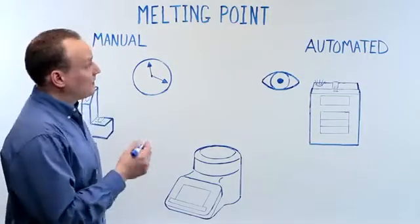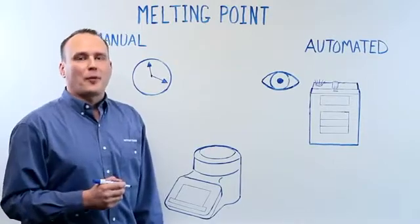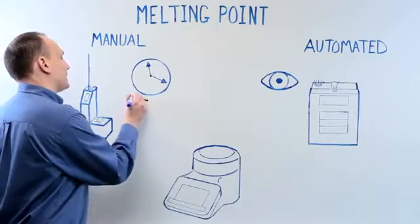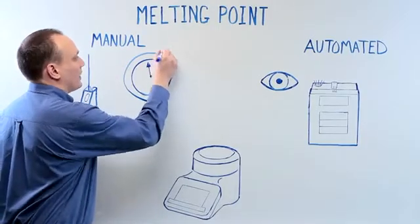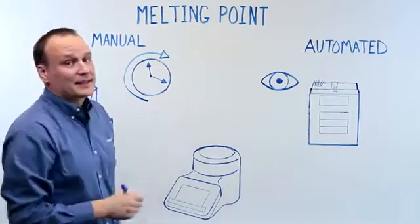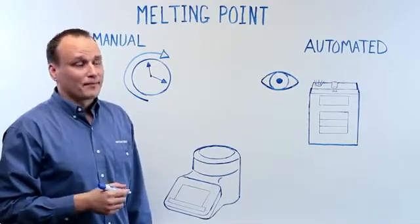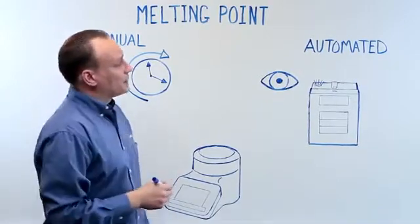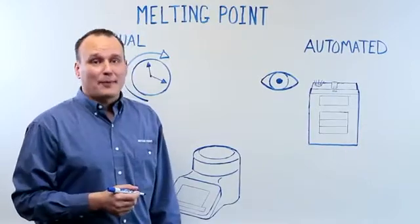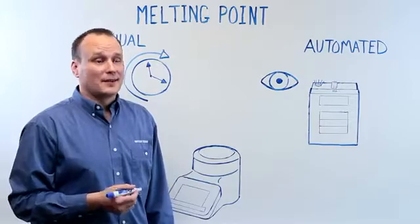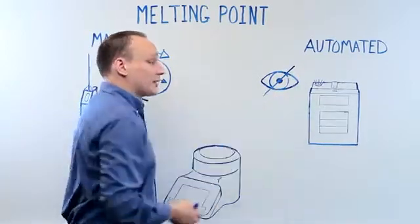Melting point - we all know it's an important measurement. Manual instruments can be tedious and time-consuming, but you actually get to see the sample melt, which is great because seeing is believing. Typical automated instruments are great for running lots of samples, save operator time and remove bias, but you can't watch the melting process as it occurs.